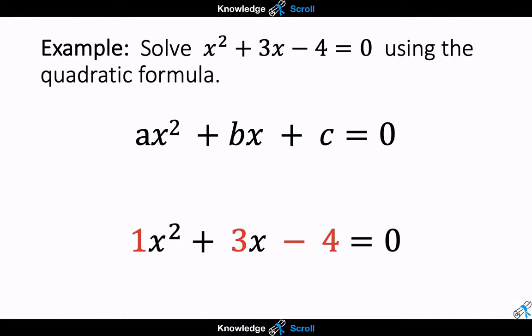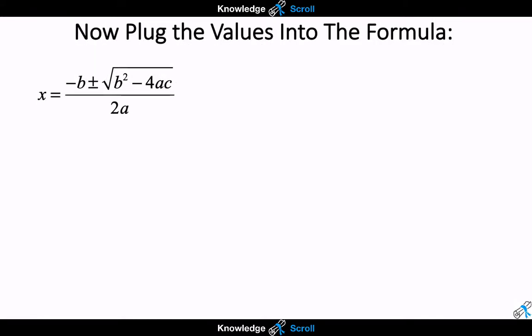We're going to solve x squared plus 3x take away 4 using the formula. Again identify your values for a, b and c and let's plug them into the formula. a is 1, b is 3 and c is negative 4. So the formula now becomes negative 3 plus or minus the square root of 3 squared minus 4 multiplied by 1 multiplied by negative 4, and this is all divided by 2 multiplied by 1.